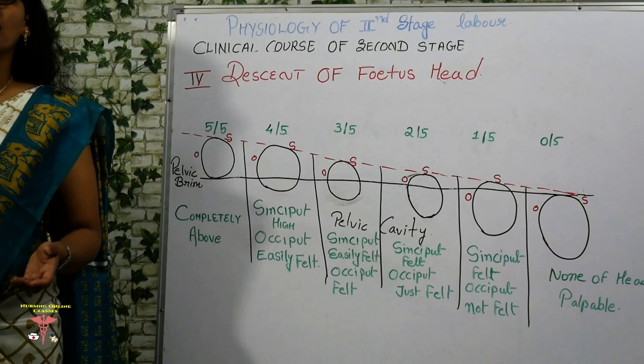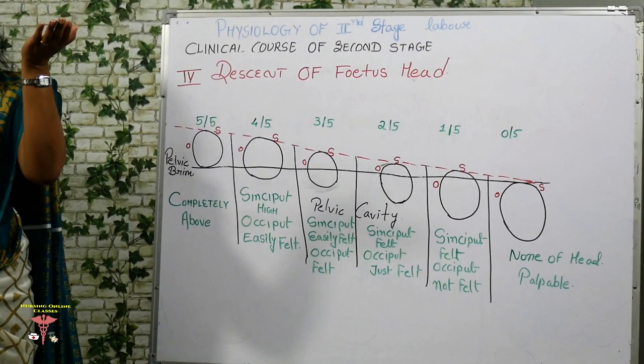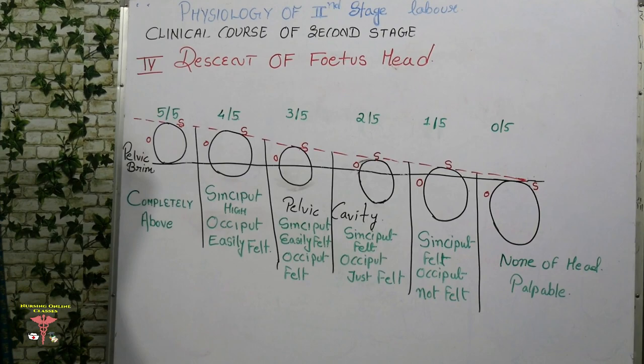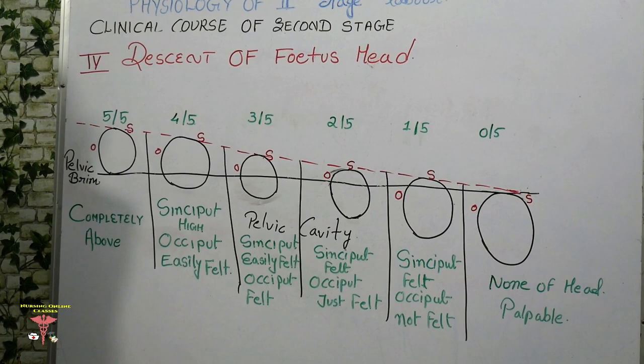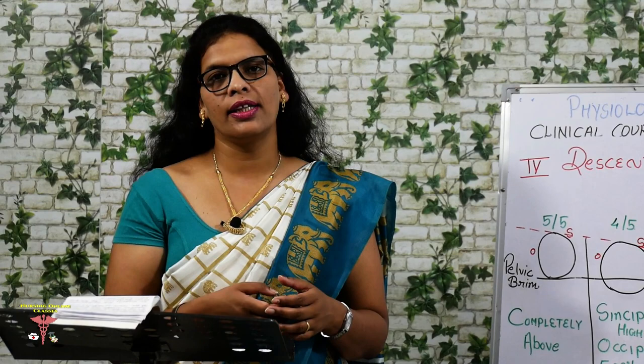Descent means the movement of the fetal head downward through the birth canal. The features of the descent of the fetal head are assessed both abdominally and by vaginal examination. By abdominal palpation you can know how much of the head has descended, and by vaginal examination you can assess how much of the head is at the level of the ischial spine.